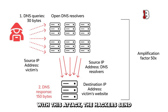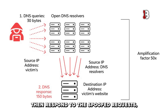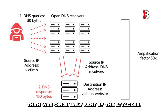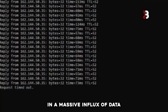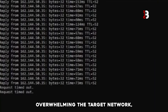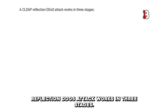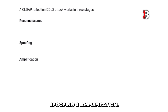With this attack, the hackers send a large number of spoofed CLDAP requests to open servers on the Internet. These servers then respond to the spoofed requests, sending a much larger amount of data to the target network than was originally sent by the attacker. This amplification effect can result in a massive influx of data overwhelming the target network, rendering it inaccessible to legitimate users. A CLDAP reflection DDoS attack works in three stages: reconnaissance, spoofing, and amplification.